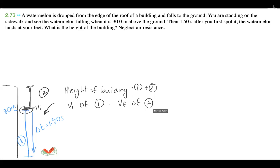But we also know that the VI of one is equal to the VF of two. And we know other pieces of information and from that we can find the distance.